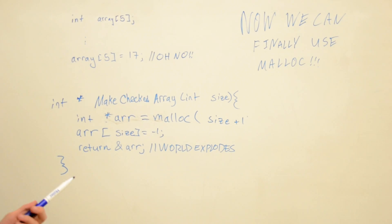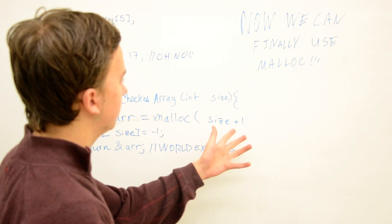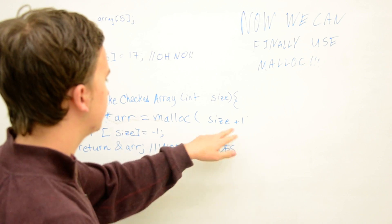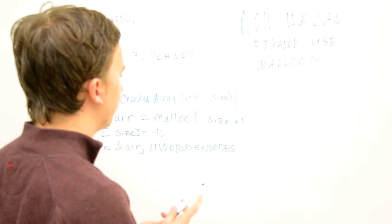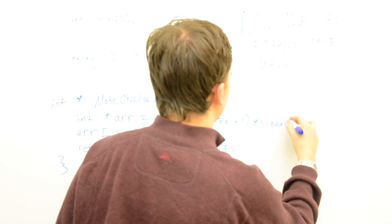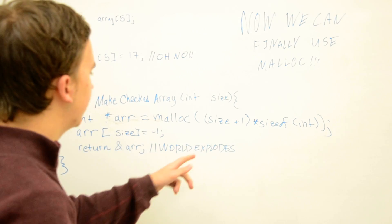because if we just make it size plus one, that'll just be exactly size plus one bytes in the heap. But we don't want that many. We want size plus one chunks of size int. We have a function called sizeof which gives you the size of the data structure, so we're going to use that to give the size of an int.